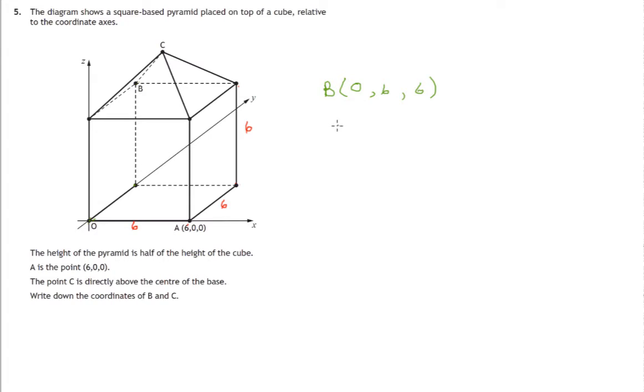Now let's have a look at the point C. Remember it told you that the point C was directly above the centre of the base. Now the centre of that base would be halfway along that side and then halfway along this side. We'll have 3 units, 3 units, and then to get up to the centre of the top face of the cube, 6 units.